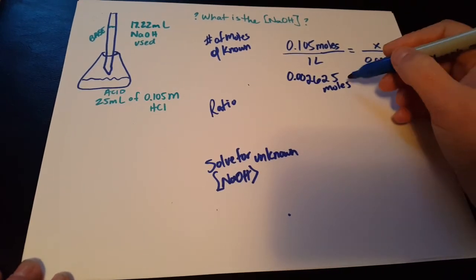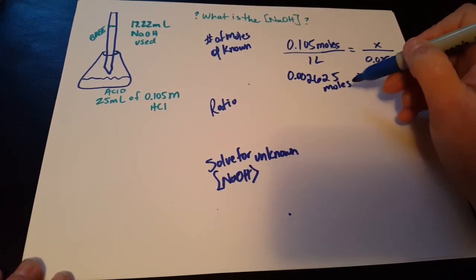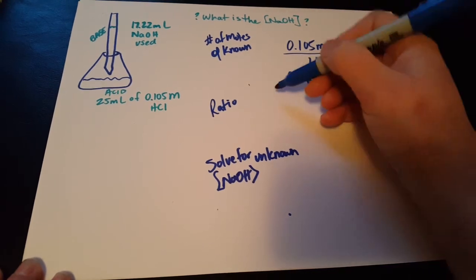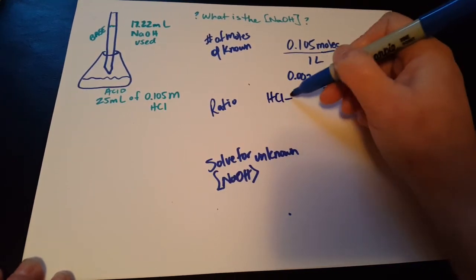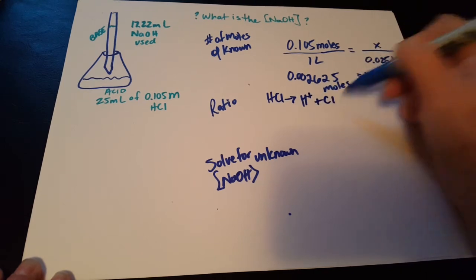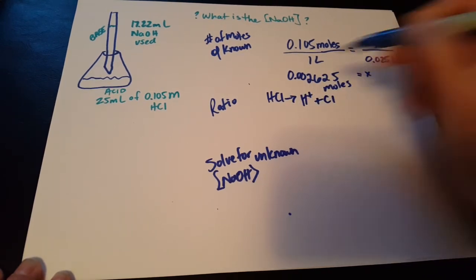This is the number of moles, both of the HCl as well as the H+, because the HCl is going to dissociate. It's a strong acid, so it will dissociate in a one-to-one ratio.